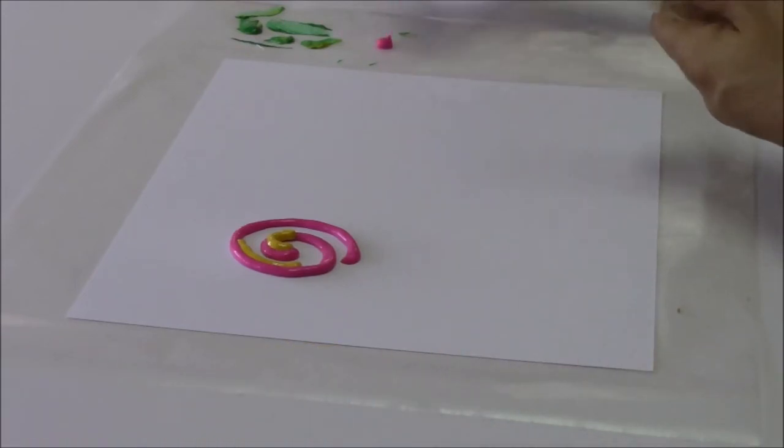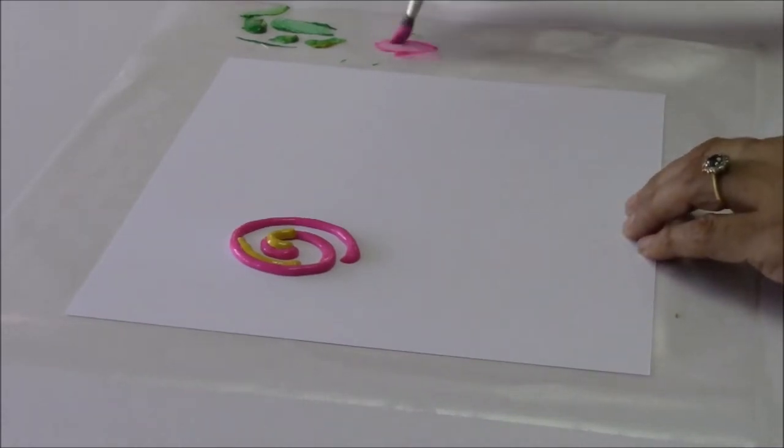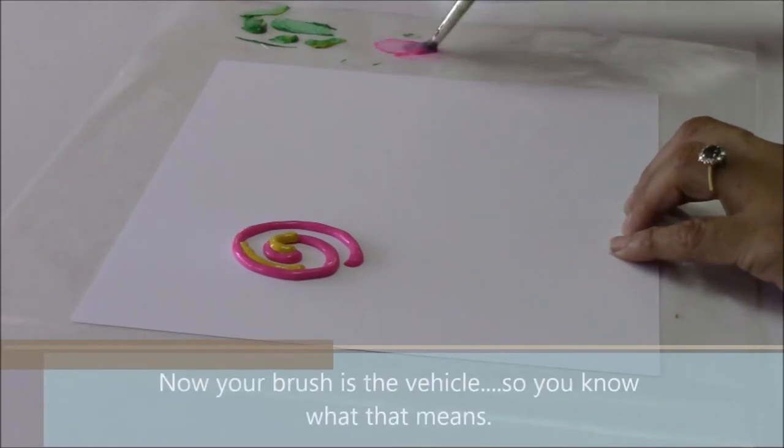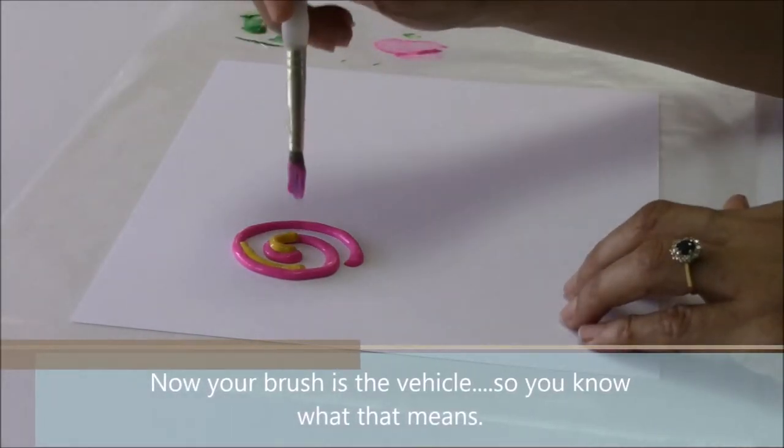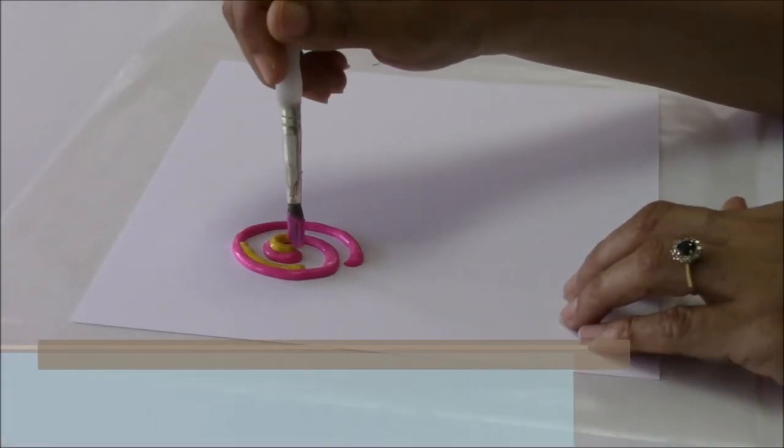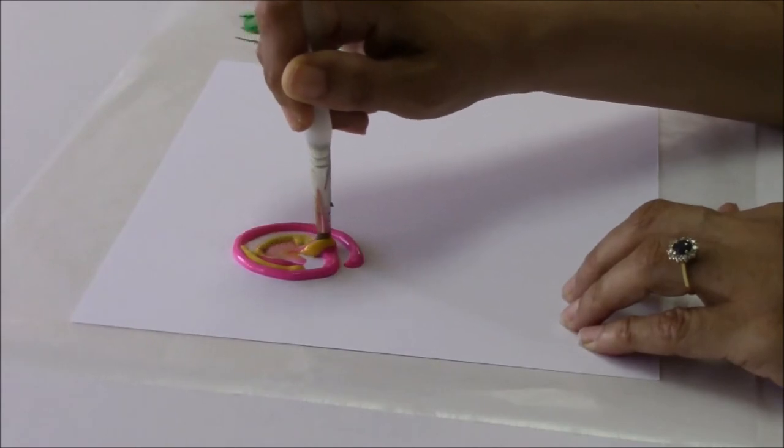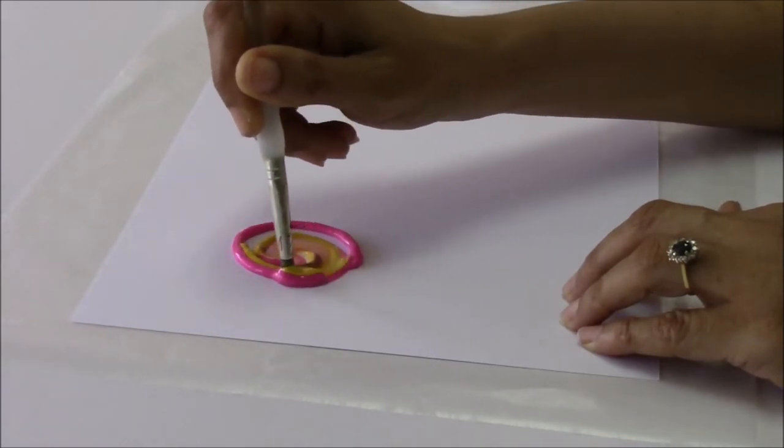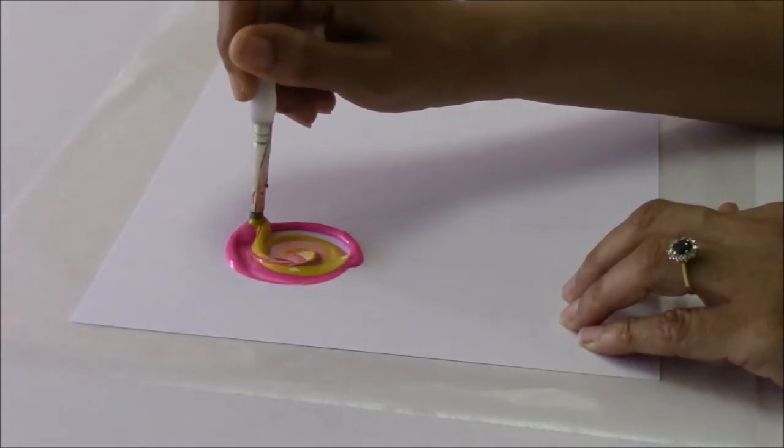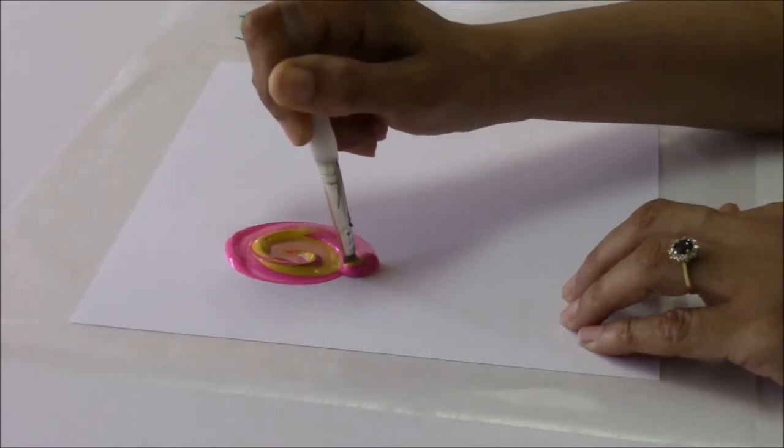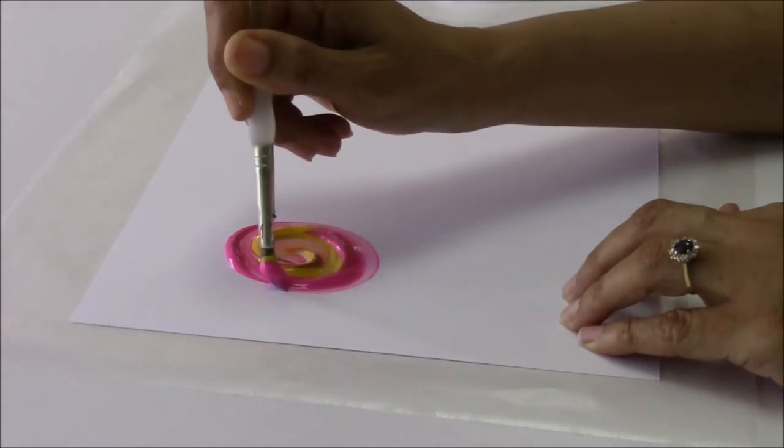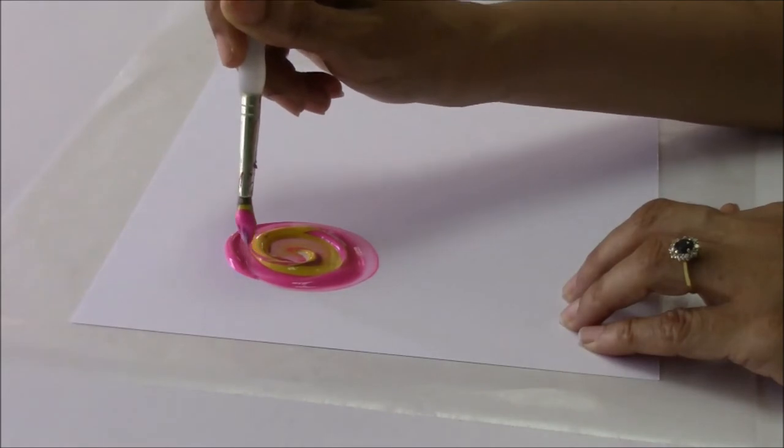I'm going to load up my brush with a little bit of pink to start this off. I'm holding my brush vertically, upright, pressing down in the middle. The brush is the vehicle, and the paint is the road. I'm staying on the road. Pressing and dragging it around until I come to the end, I'm lifting off gently.